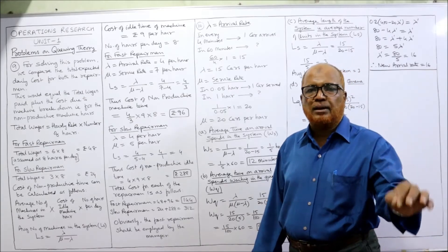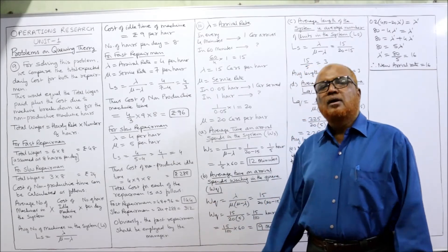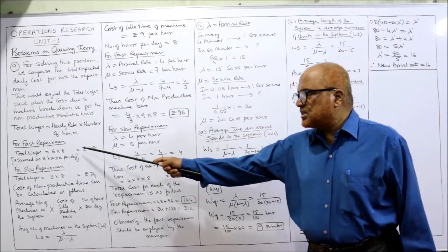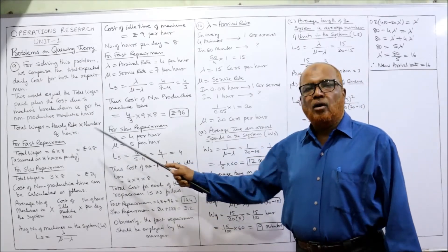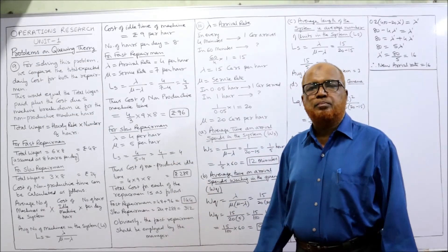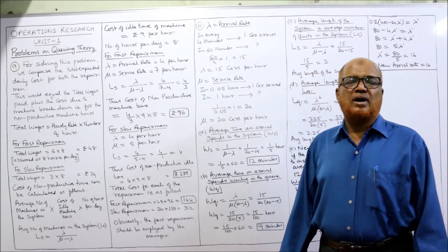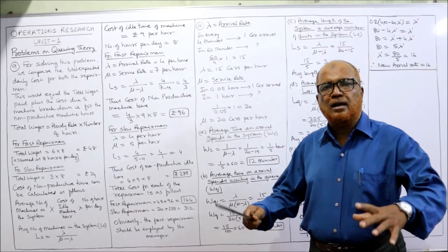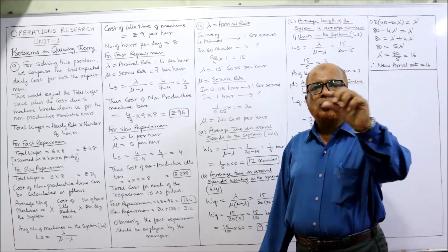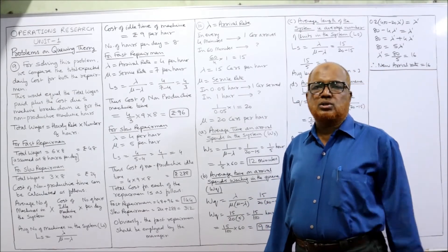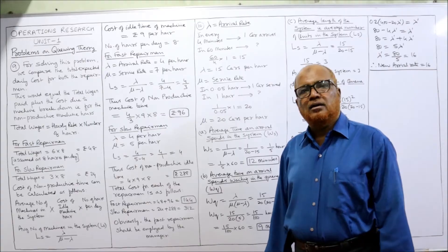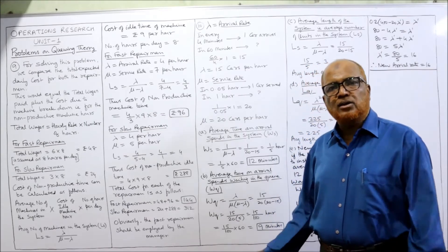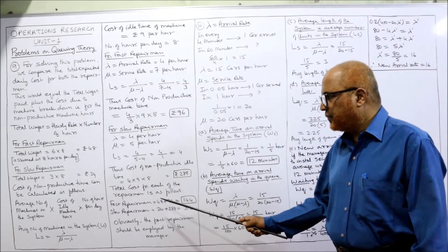The cost of non-productive idle time for the slow repairman is four times nine times eight, which equals 288 rupees. Now we have total wages and cost of non-productive idle time for both repairmen, so we add them up to get the total cost.